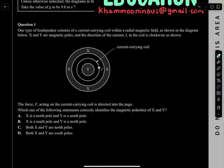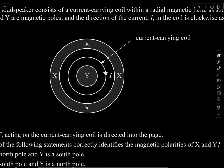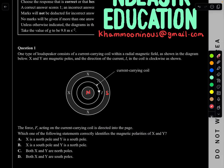Question 1. One type of loudspeaker consists of a current-carrying coil with a radial magnetic field as shown in the diagram below. X and Y are magnetic poles, and the direction of the current I in the coil is clockwise. The force F acting on the current-carrying coil is directed into the page — which of the following statements correctly identifies the magnetic polarities of X and Y?